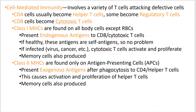This is video five of the immune system lecture sequence, and here we're moving on to cell-mediated immunity. The adaptive immune system has two subcategories: humoral immunity, which involved B cells and antibodies, and cell-mediated immunity, which involves T cells and direct or indirect attacks on your own defective cells.